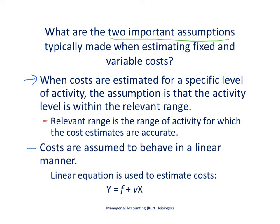The second assumption is that costs are assumed to behave in a linear manner. Going back to the videos about estimating cost using historical information, I use this cost equation. The cost equation helps us find total costs by adding total fixed costs to total variable costs. The assumption is that our total fixed costs will stay the same and our variable cost per unit will stay the same — that is the linear assumption.